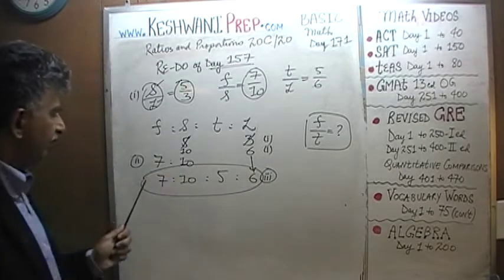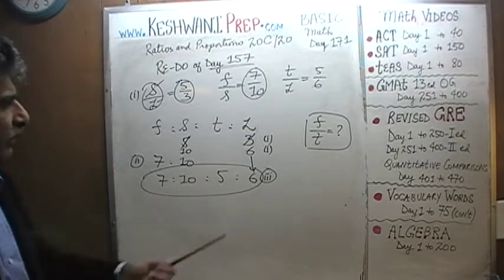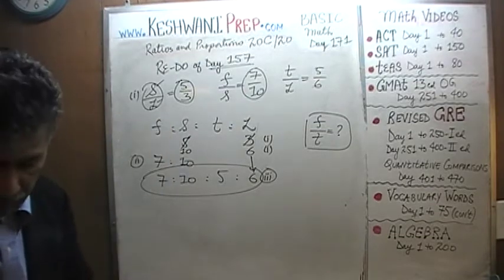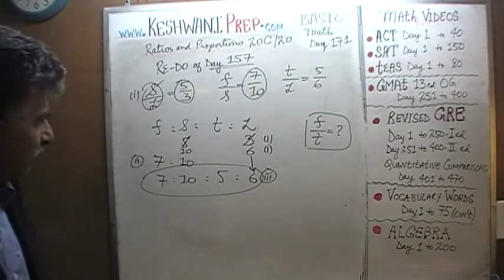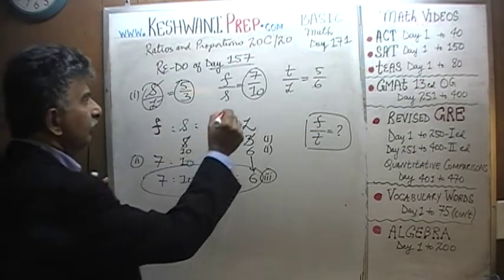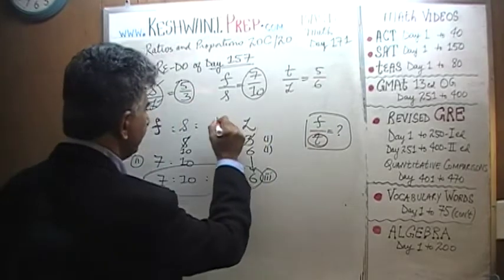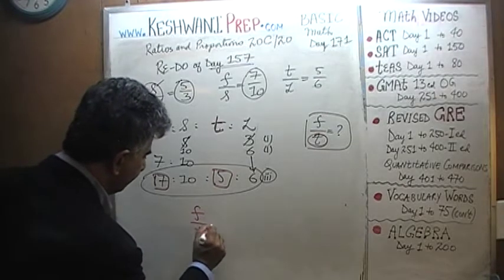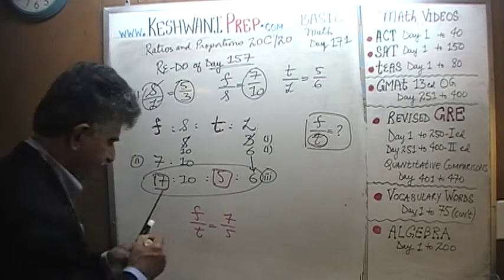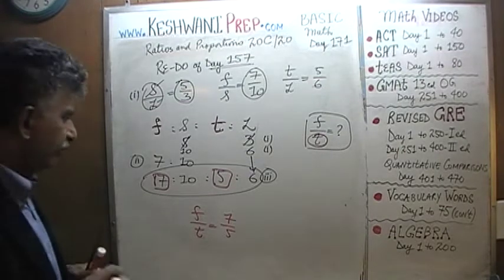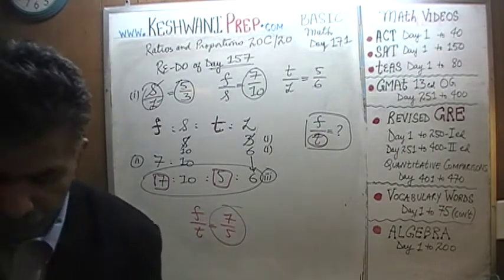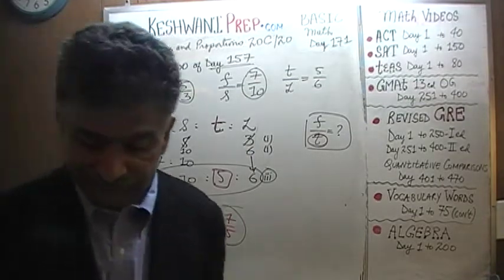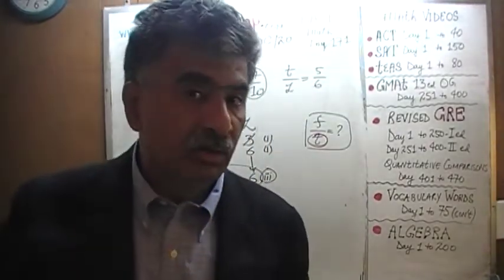The ratio of the four variables is 7 to 10 to 5 to 6. Now we can answer the question — F to T. Where is F? Right here. F to T: F is our 7 and T is our 5. Therefore F to T is simply 7 to 5. All done in a matter of a few seconds, as opposed to the traditional, classical, academic way which took us a few minutes.